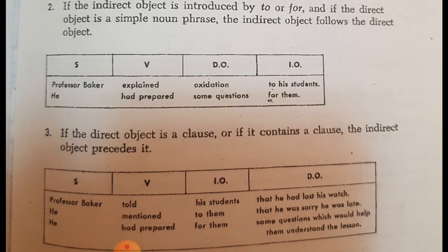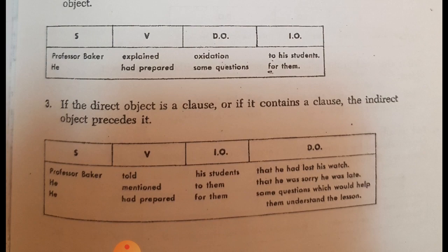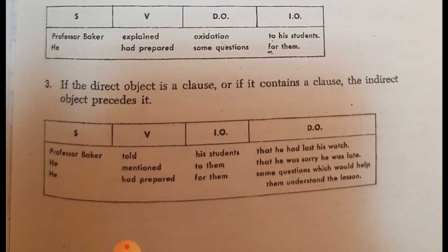Third, if the direct object is a clause, or if it contains a clause, if the direct object is long, a little bit, a clause or contains a clause, so it must come at the end after the indirect. Example: Professor Baker told his students that he had lost his watch.